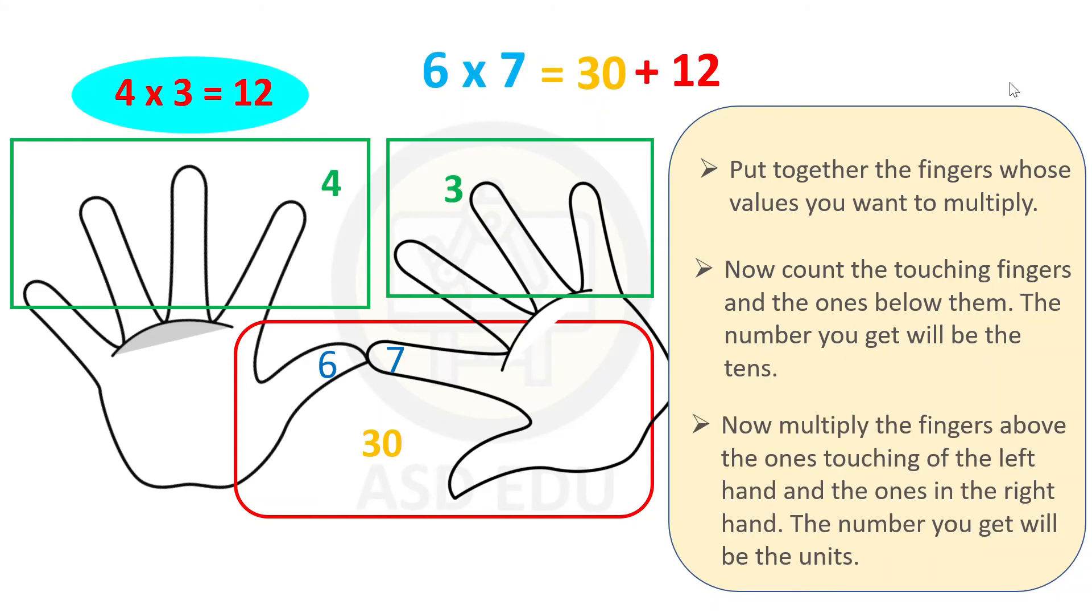Now multiply the fingers above the ones touching of the left hand and the ones in the right hand. We have 4 fingers on the left hand and 3 fingers on the right hand. We have 4 times 3 equals 12, so 6 times 7 equals 30 plus 12 equals 42.